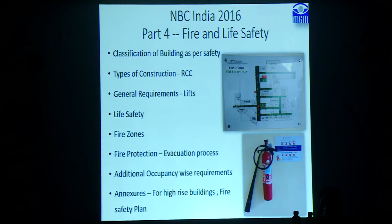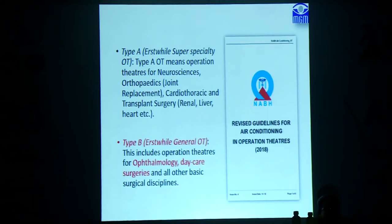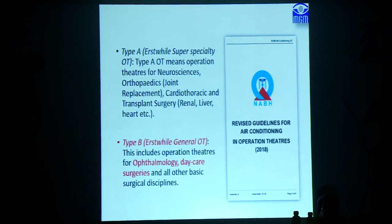Classification of building is as per safety types of construction. All details are given in the book — general requirements like lifts, life safety, fire zones, fire protection, evacuation processes, additional occupancy-wise requirements, infrastructure rooms, annexes, high-rise buildings, fire safety plans, and other things. Type A super specialty OT covers neurosciences, orthopedics, cardiothoracic, and transplant surgery. For ophthalmology, we relate to Type B, which is the general OT, since we are daycare along with other basic surgical disciplines.